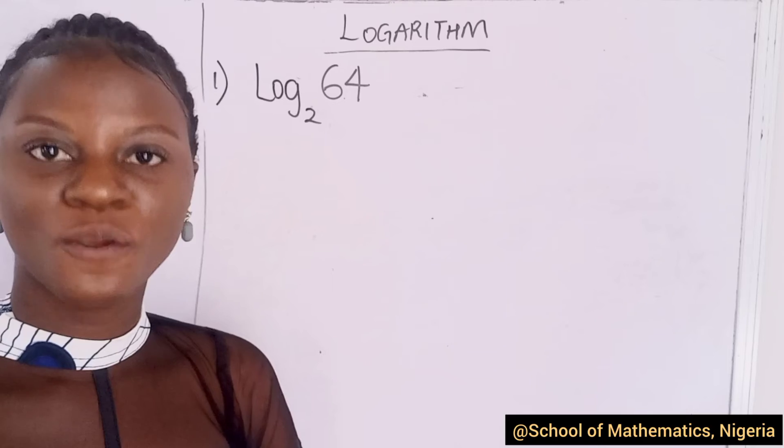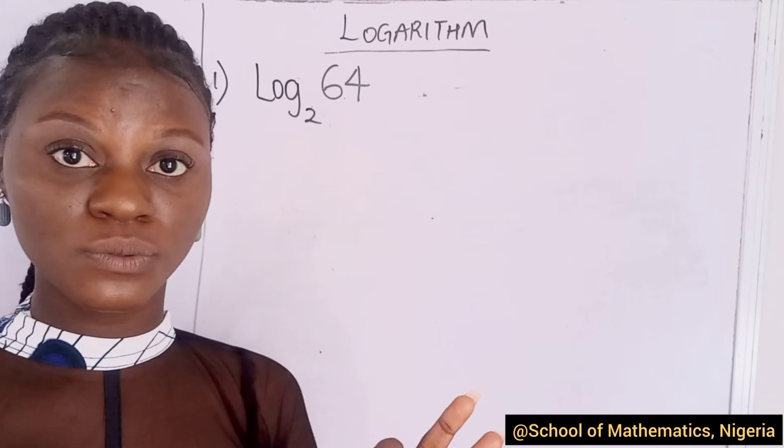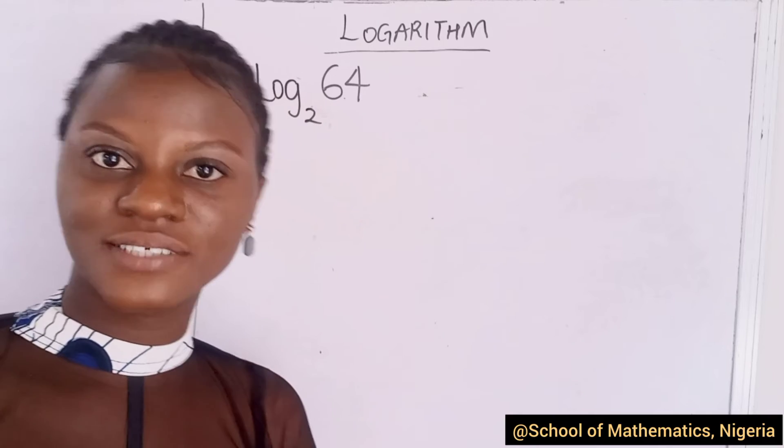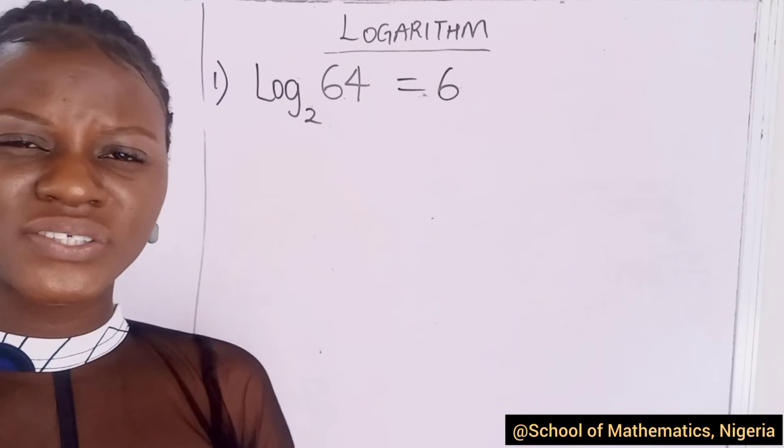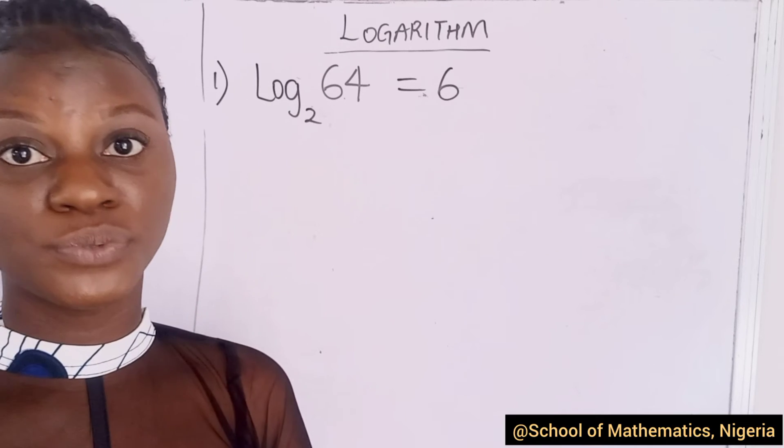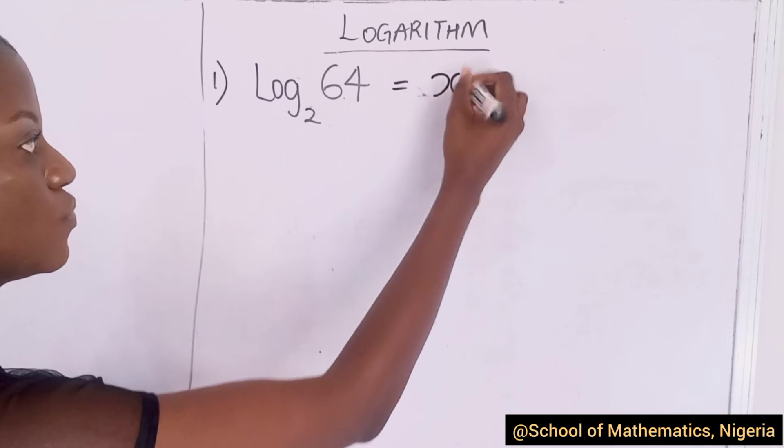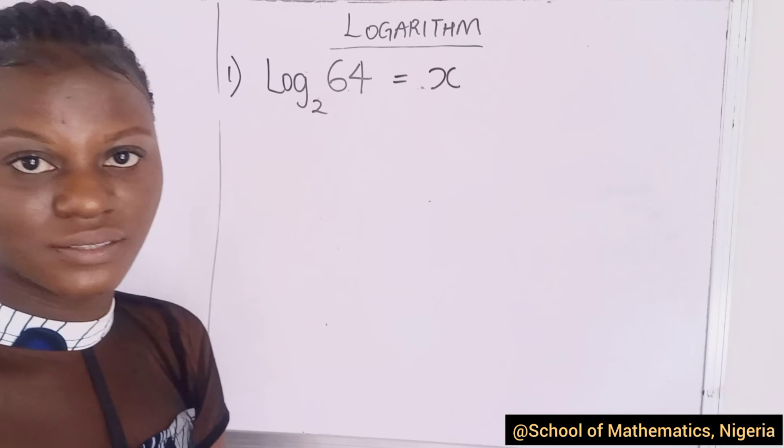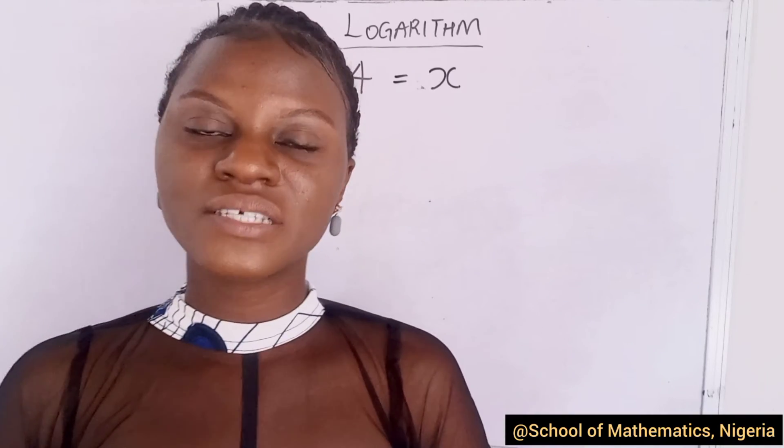We said that log is just trying to say, how many times can you multiply 2 to get 64? Some geniuses already have an answer. They already know that they have to multiply 2 six times to get 64. But for people who do not actually know that you have to multiply 2 six times to get 64, what do we do?